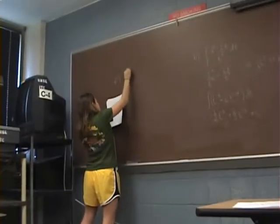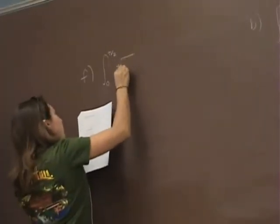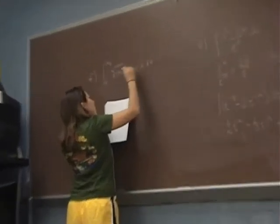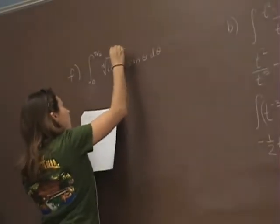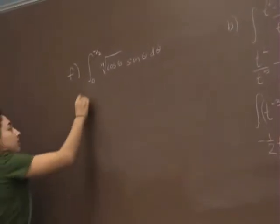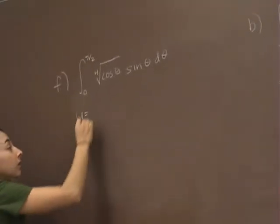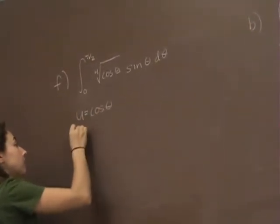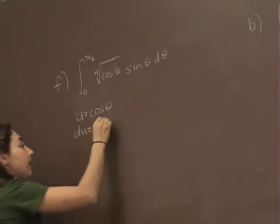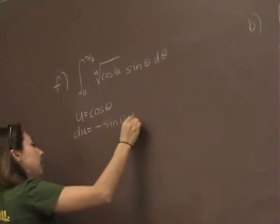We've got an integral from 0 to pi over 2 of the 4th root of cosine of theta times sine of theta d theta. Alright, how am I going to do this one? A u substitution for what? Cosine of theta. If u is cosine of theta, what is du? Negative sine of theta d theta.